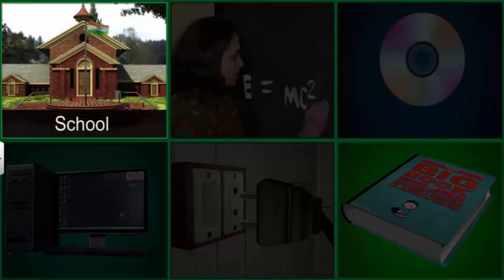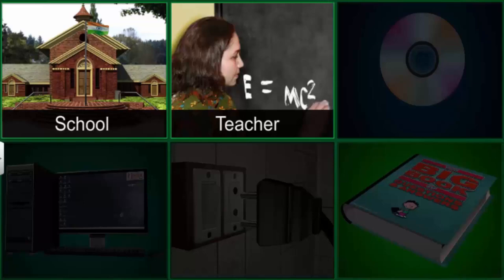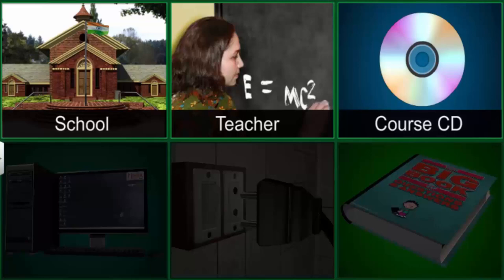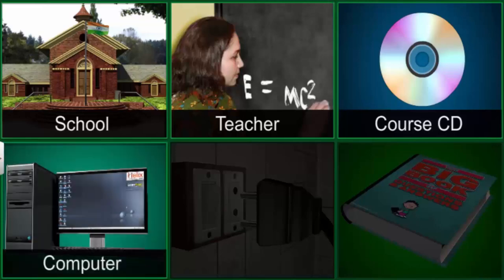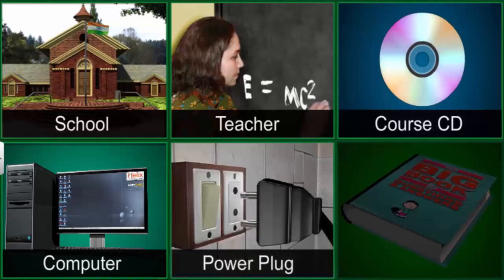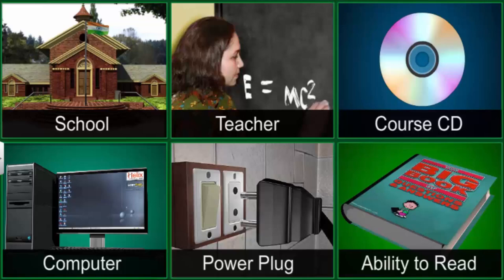Your school where you can sit and watch this course. Your teacher who can explain it to you. A CD that contains this course. A computer to run the CD on. Electricity supply to run the computer. Your own ability to read and write. These are just some of the things that allow you to go through this course. All these are examples of things that you use to satisfy your need for learning.